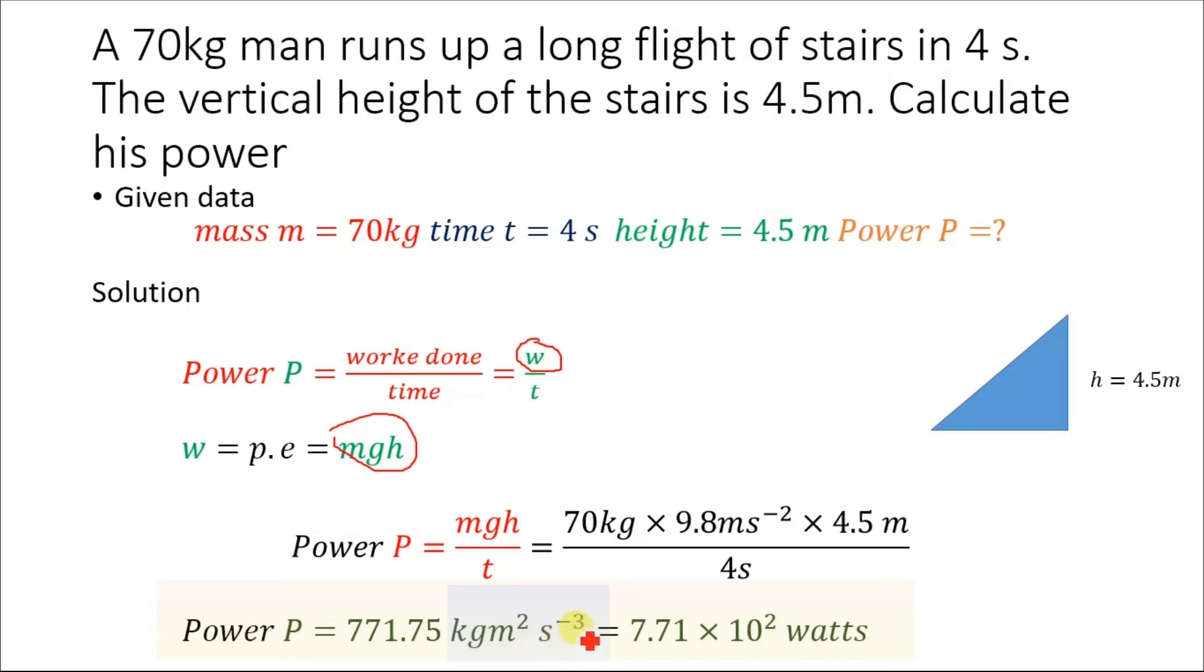This s to the power minus 3 came from this s. When we move this s to the upside, this will become s to the power minus 1. And then when we multiply this second with this second, we will get s to the power minus 3.